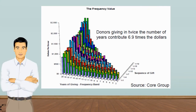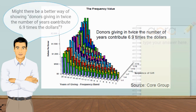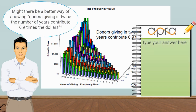Perhaps the most important element of a visualization is that it is clear and easy to understand. This is a chart I saw years ago at a presentation for APRA. The main takeaway here is that donors giving in twice the number of years contribute 6.9 times the dollars. Is that message clear to you as a reader? How might we make this takeaway statement more clear?